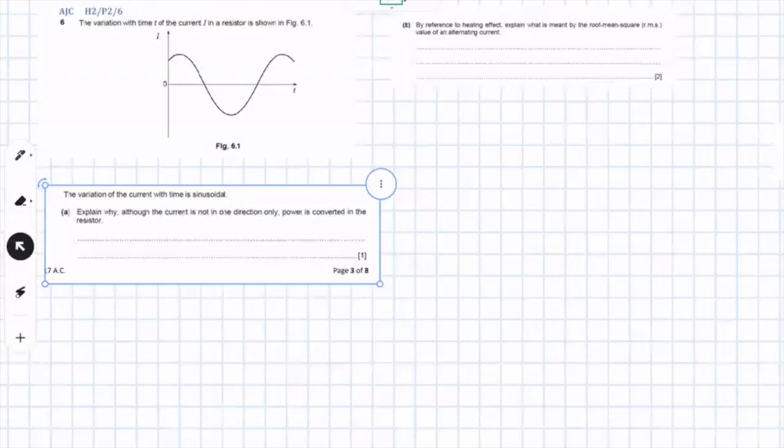They should cancel, right? But why don't they cancel? Why you still have power? The power is supposed to be zero because they cancel each other, right? Yeah. But why it's not zero?